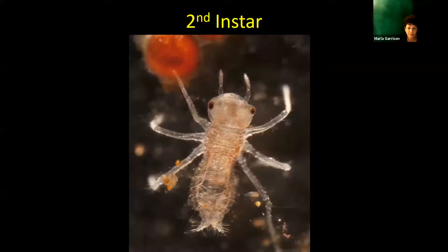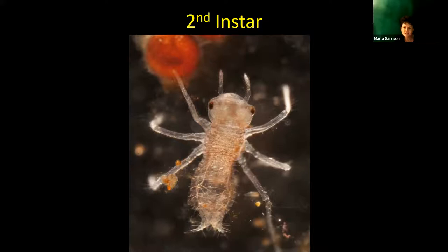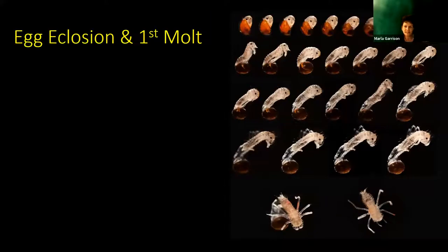What emerges is a second, fully functional instar capable of locomotion and feeding, with the yolk sac incorporated into the midgut to help until the cuticle hardens and it can search for prey. Depending on the species, second instars generally range between one to two millimeters in length. Here is the entire, more detailed sequence of events depicted on this slide.